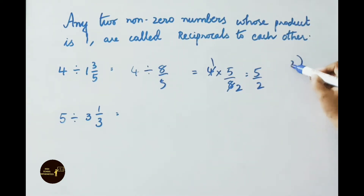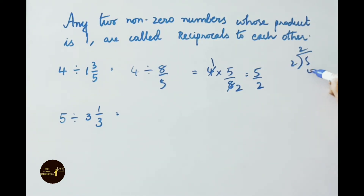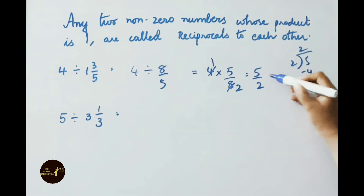We can simplify this by doing the division. 2 × 2 = 4, 5 minus 4 = 1. So the answer is 2 and 1/2.